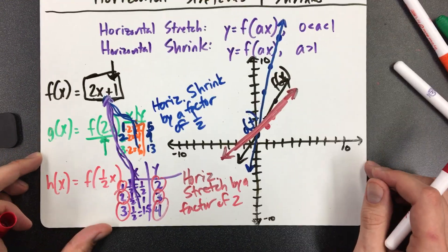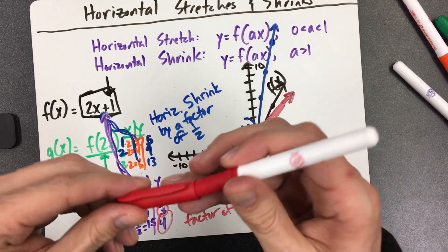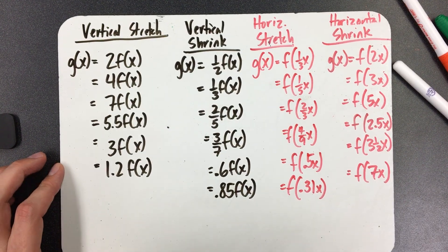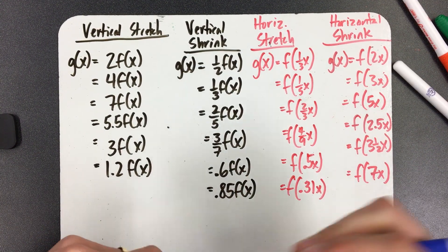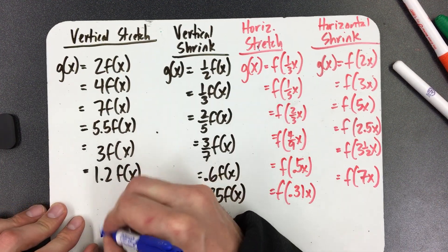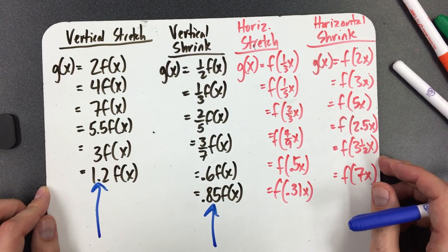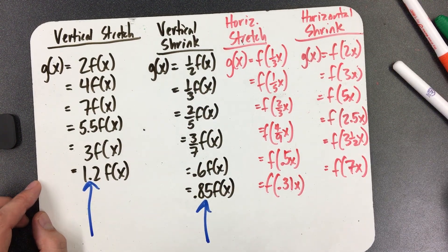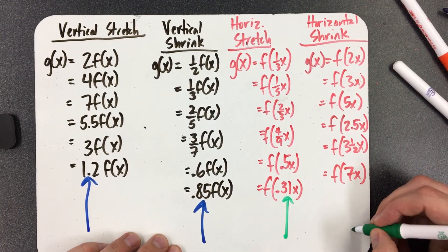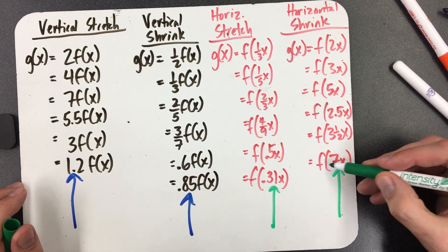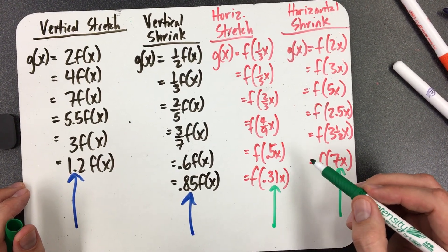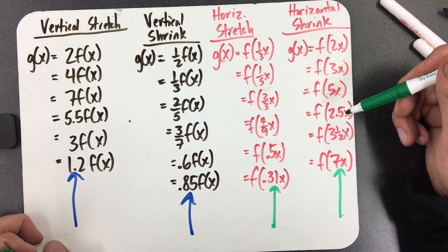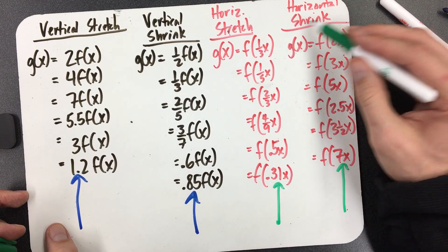The good news is you don't have to graph these very often — you mostly just need to recognize them. Here's a quick recap board. For vertical transformations, notice where all the numbers are: they're in front of the letter x, in front of the parentheses. For horizontal ones, the number is inside the parentheses. That's how you tell if it's vertical or horizontal. If the number is outside the parentheses in front of f, it's vertical; if it's inside the parentheses with x, it's horizontal.